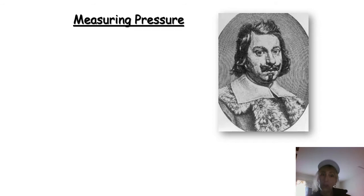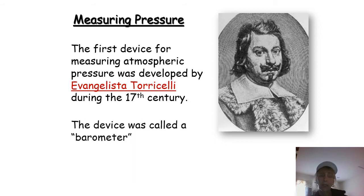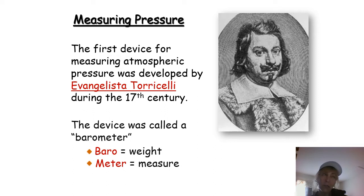How do we measure air pressure? That dapper young man on the right of your screen is credited with building the first instrument to measure atmospheric pressure, and it's called the barometer. The man is Evangelista Torricelli, and he did it way back in the 17th century. The name of the device that measures atmospheric pressure is the barometer. It comes from two words — baro meaning weight and meter meaning to measure — so you're measuring the weight of the air on you.